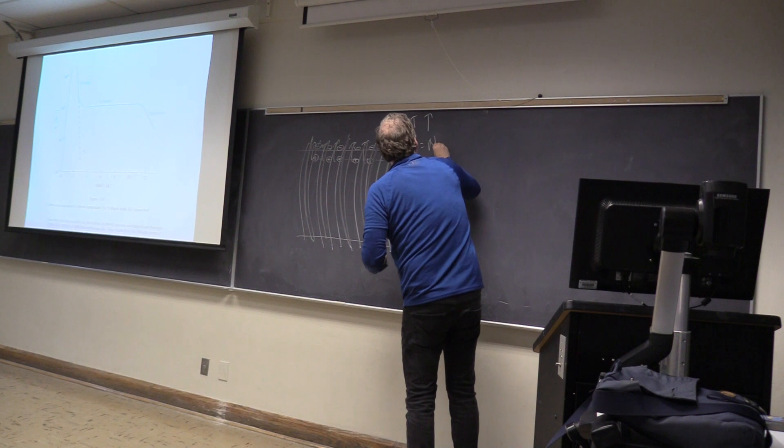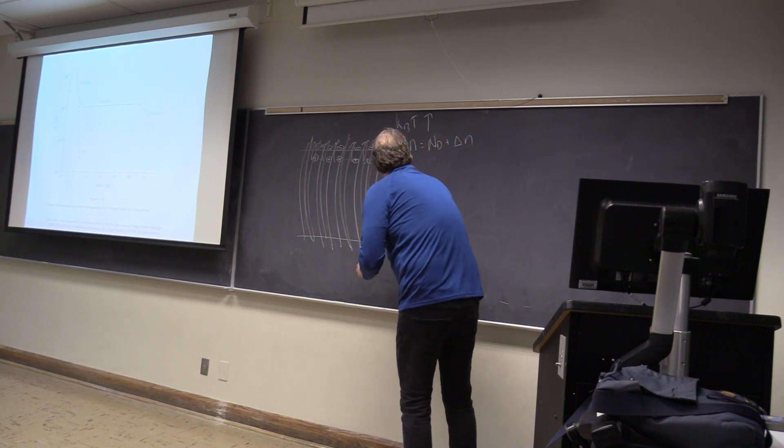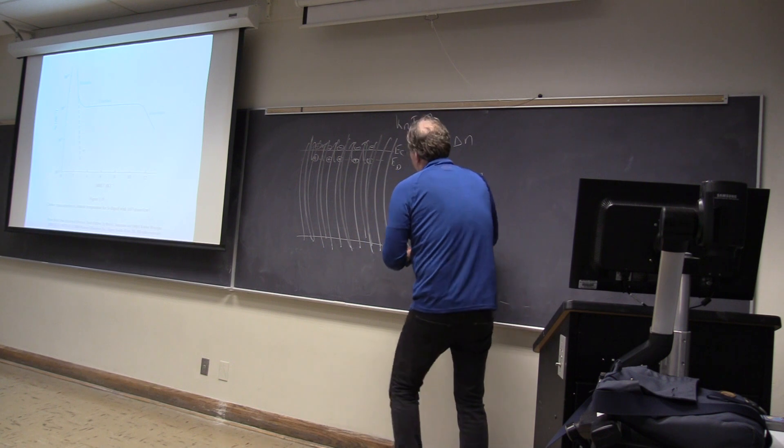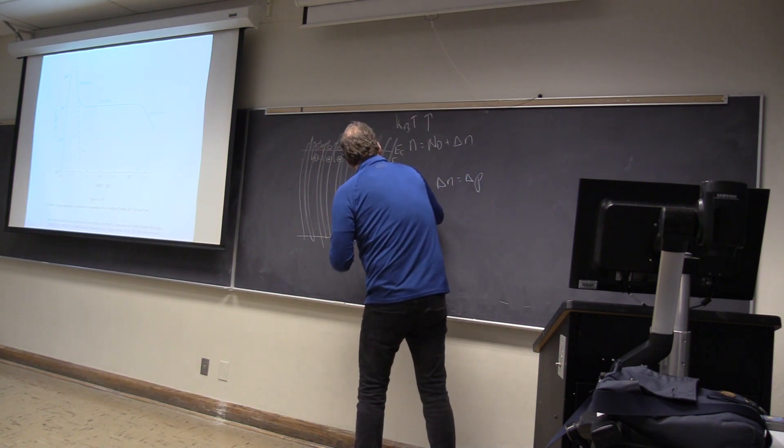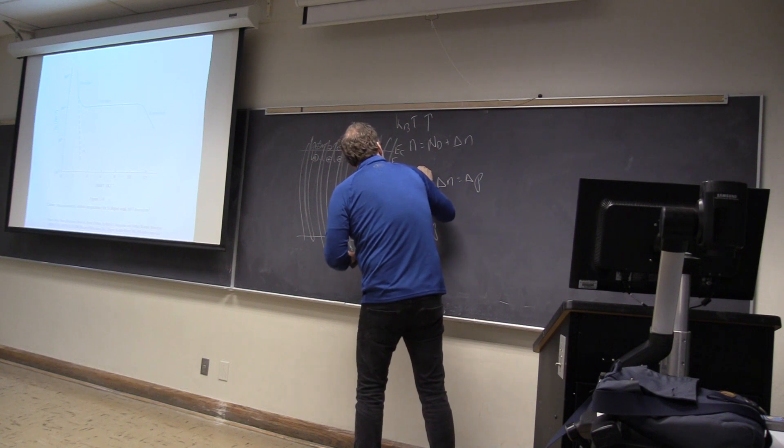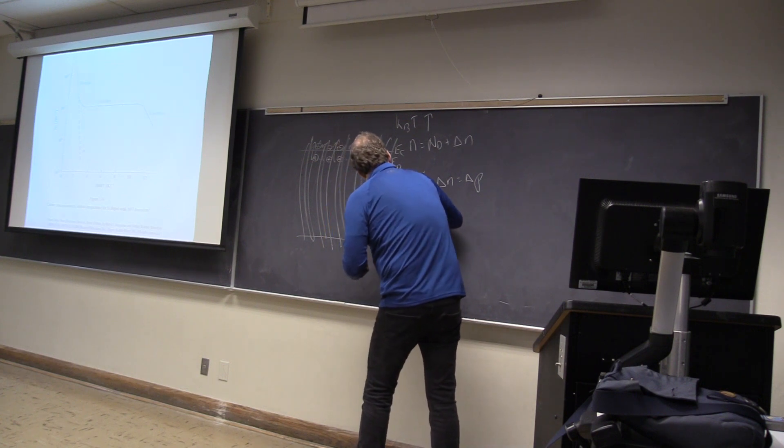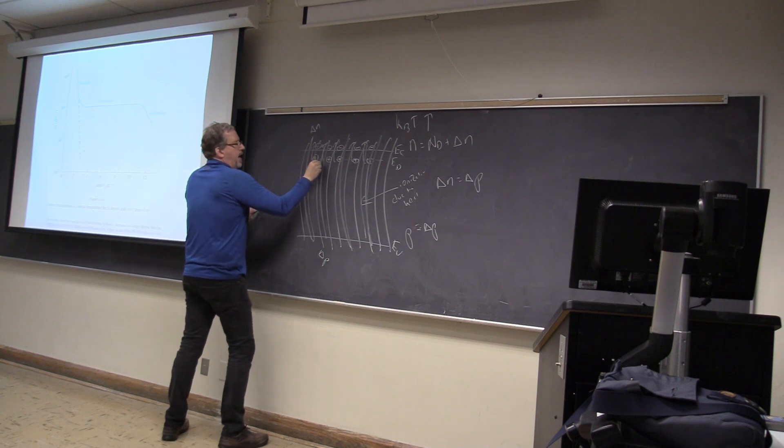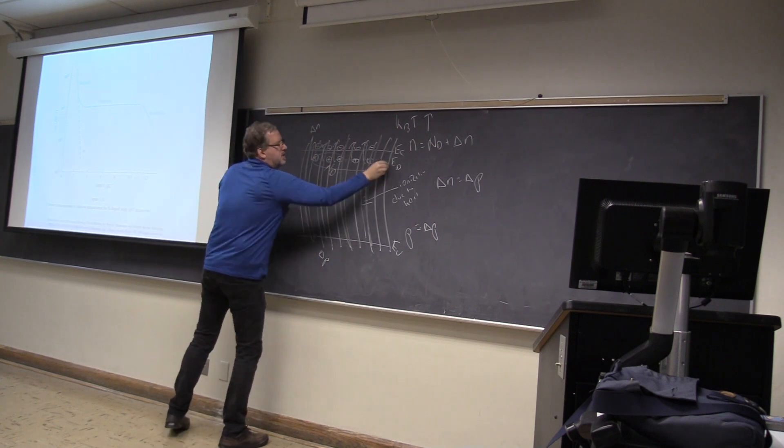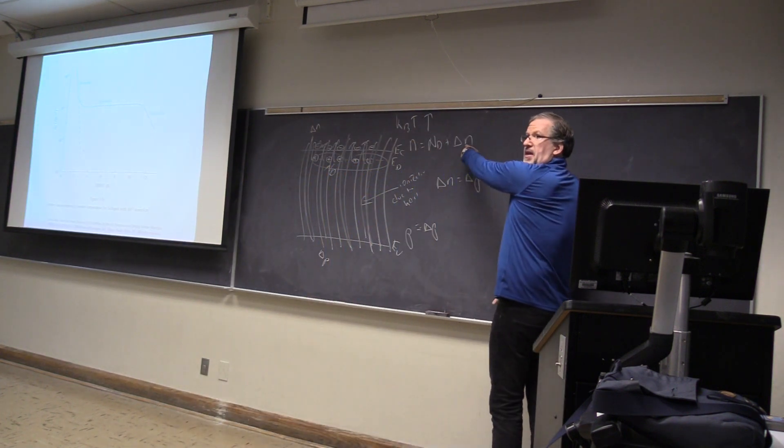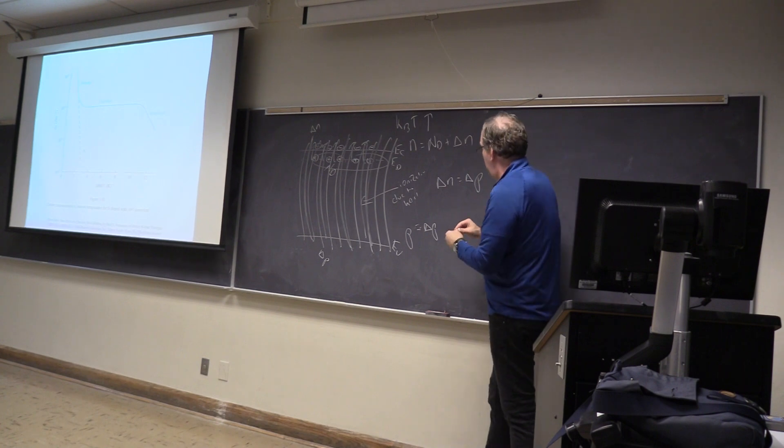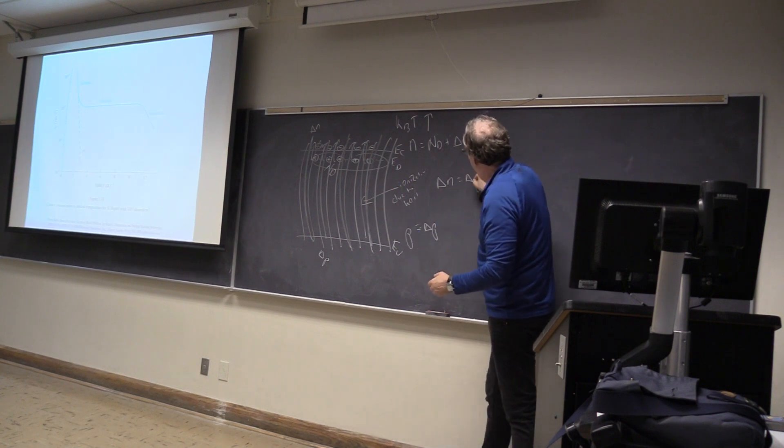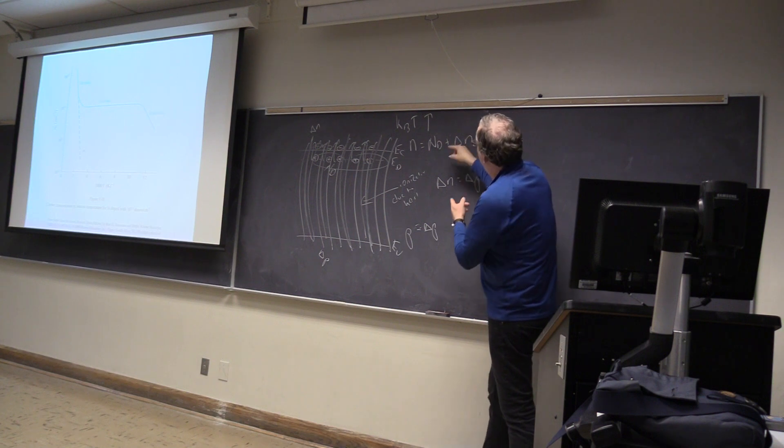This is going to be n equals n_d plus delta n, and this will be p equals essentially delta p. But delta n equals delta p because this is ionization due to heat. So the extra down here is the delta p, the extra up here is delta n, and I have n_d from the donors. As it gets hotter, delta n and delta p are equal to each other.